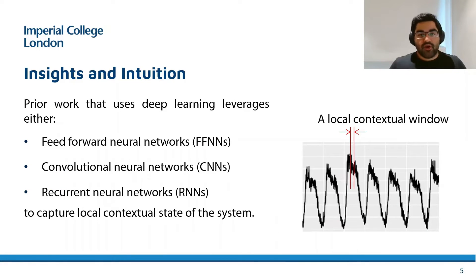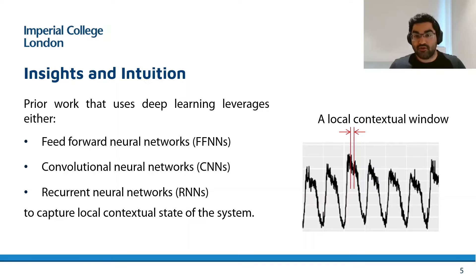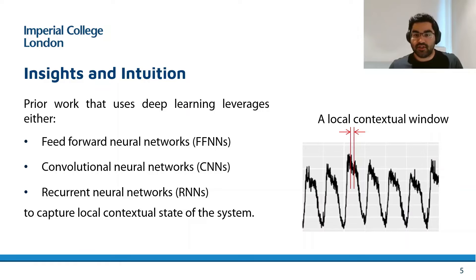Prior work, especially state-of-the-art methods, typically relies on deep neural networks to detect anomalies. To do this, they partition the complete time series into equal-sized chunks referred to as time series windows or local contextual windows, and utilize either feed-forward networks, convolutional neural networks, or recurrent networks to capture historic trends and reconstruct time series.